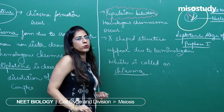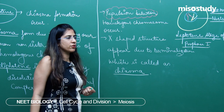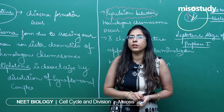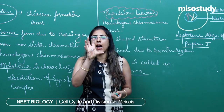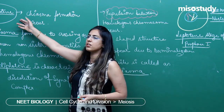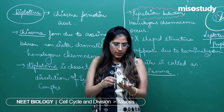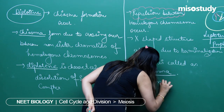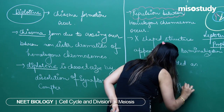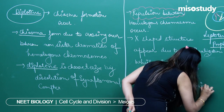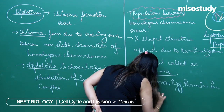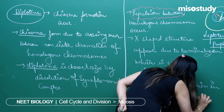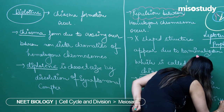The repulsion between the chromosomes is a characteristic feature of the diplotene stage. For example, the human egg cell is said to remain in the diplotene stage for up to 12 to 15 years. So it remains in the diplotene stage for a very long time.